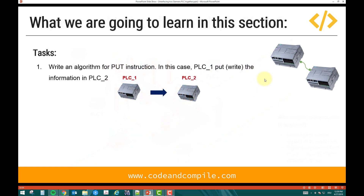Let's see the tasks in this lesson. The first task is to write an algorithm for the PUT instruction. PUT is an instruction we use for intercommunication. In this case, we want PLC1 to put values into PLC2 — PUT is like writing a value from PLC1 to PLC2. So if I change a value in the data block in PLC1, it will write to the data block of PLC2. It can also write outputs, or PLC2 can read inputs from PLC1. Whatever information you want to share, we will check how to do that.